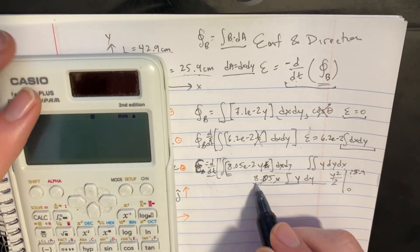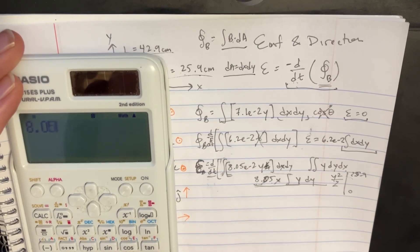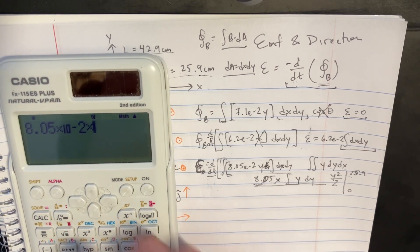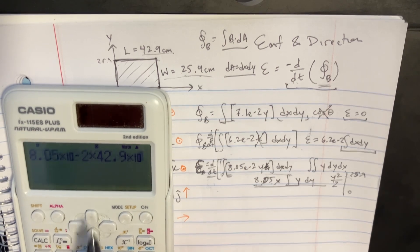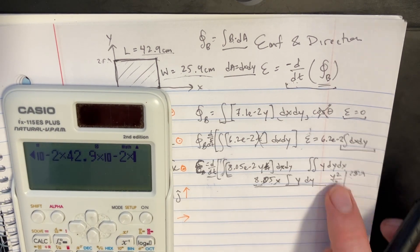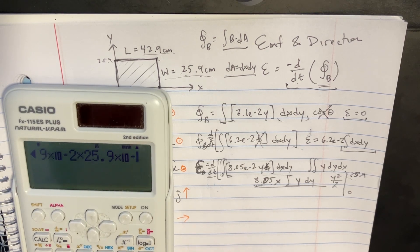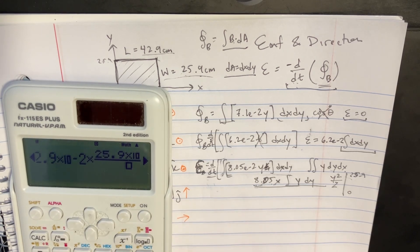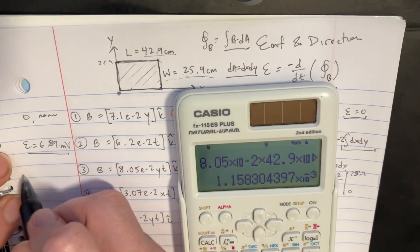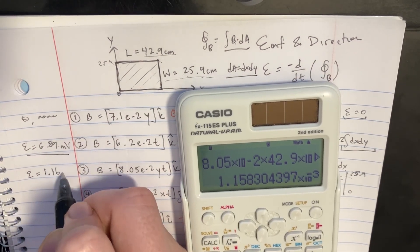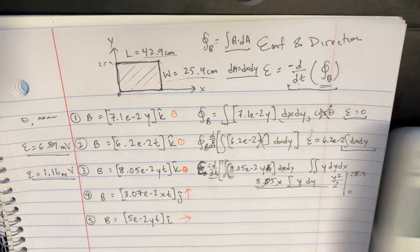But essentially, you'll get 8.05 times, and I think it's negative 2, 8.05 negative 2. And then we're going to multiply that by the x, which was 42.9 negative 2 there. And then we're going to have that integral, which is going to be 25.9 negative 2 squared, and you can divide that by the 2 there. So we'll get the next one, which is EMF being equal to 1.16 millivolts.